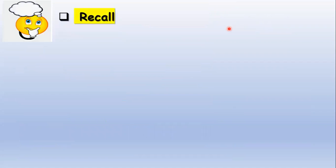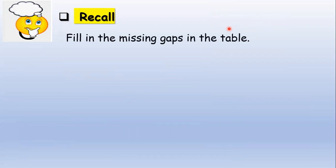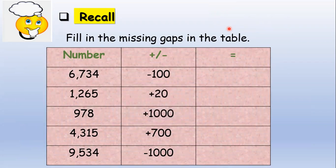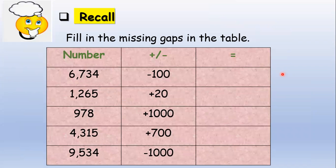Let us have a short recall about the past lesson. Let's see if you can still add and subtract groups of tens, hundreds, and thousands. These are the given numbers. Let's do the first one: 6,734 minus 100 equals 6,634.